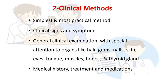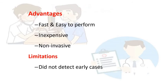The second method is clinical methods. These are the simplest and most practical methods used in clinics. We observe signs and symptoms and conduct a general examination with special attention to organs like hair, gums, nails, skin, eyes, tongue, muscles, bones, and thyroid glands. We also take the medical history of the patient, including any treatment and medication received previously. Through keen observation of these organs, we can assess what type of deficiency the patient has.